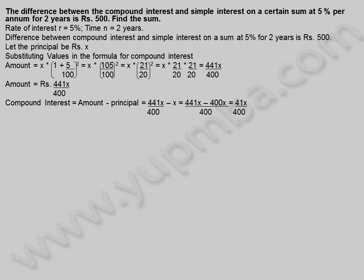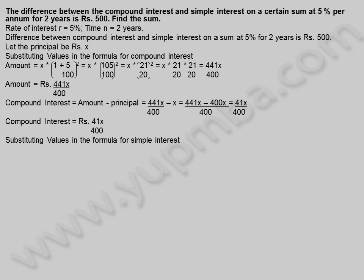Compound interest is equal to amount minus principle, which equals 441X by 400 minus X, giving 41X by 400. Substituting values in the formula for simple interest: simple interest equals X into 2 into 5 divided by 100, which equals 10X by 100 rupees.